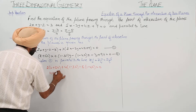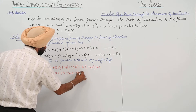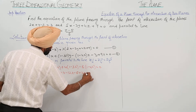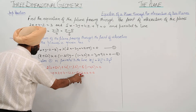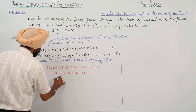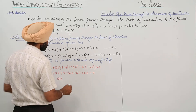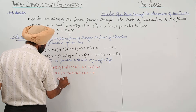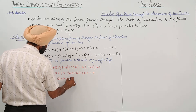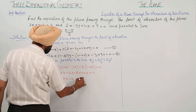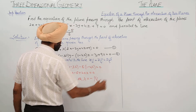Expanding: 4 + 10λ + 4 - 12λ - 5 + 20λ = 0. Collecting terms: 18λ + 3 = 0, so λ = -1/6.